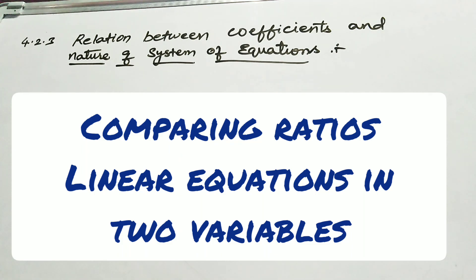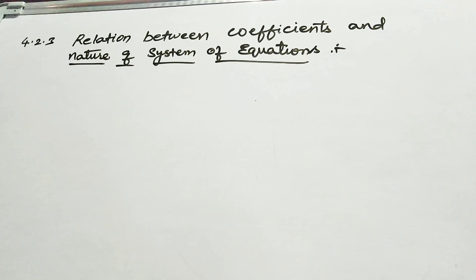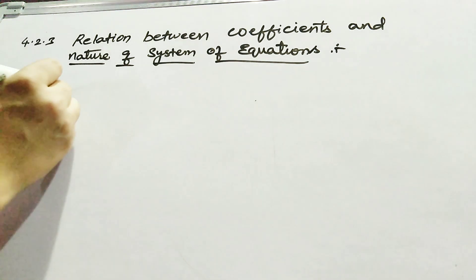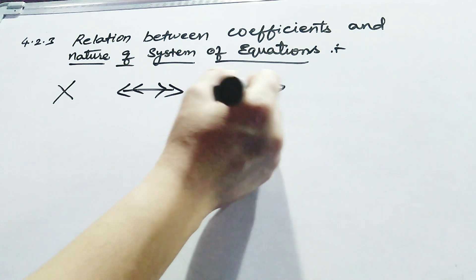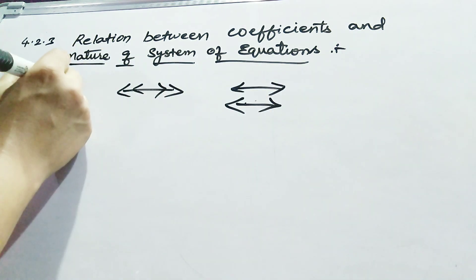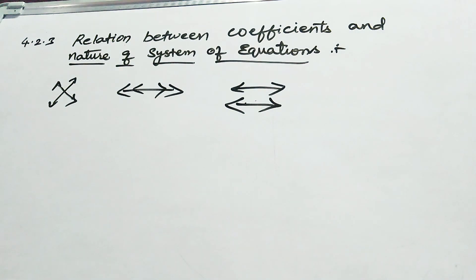Hello listener. In our previous video we discussed the graphical method of finding the solution of a pair of linear equations. By seeing an equation you have to find out whether that type of equation is an intersecting one, a coincident one, or a parallel line. In our previous class we discussed there are three possibilities: either your lines intersect with each other, coincide with each other, or are parallel with each other.